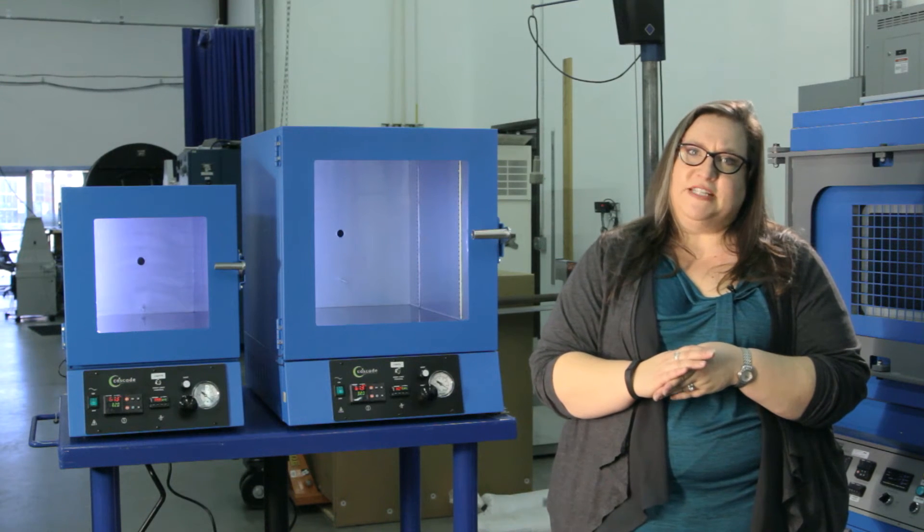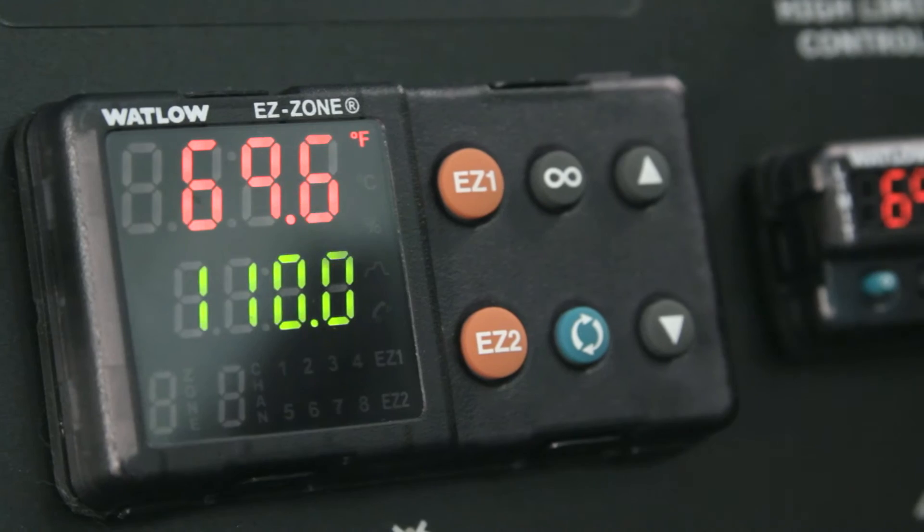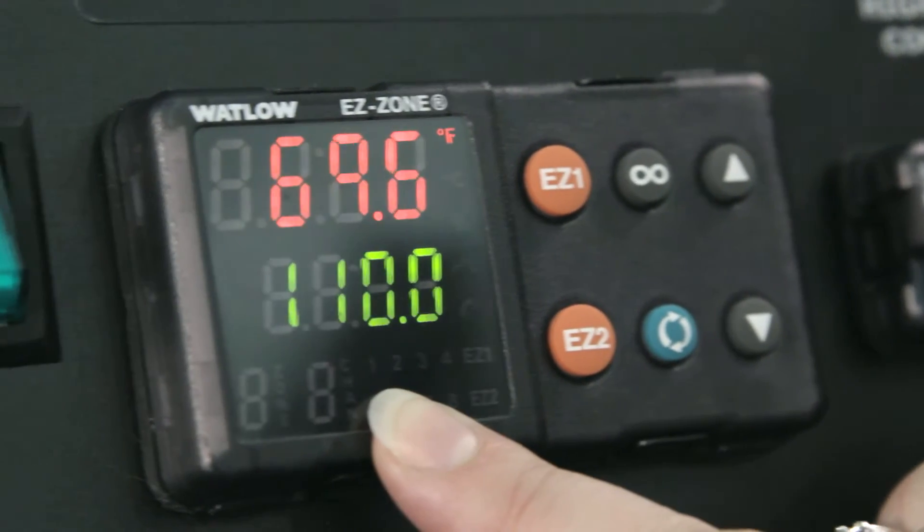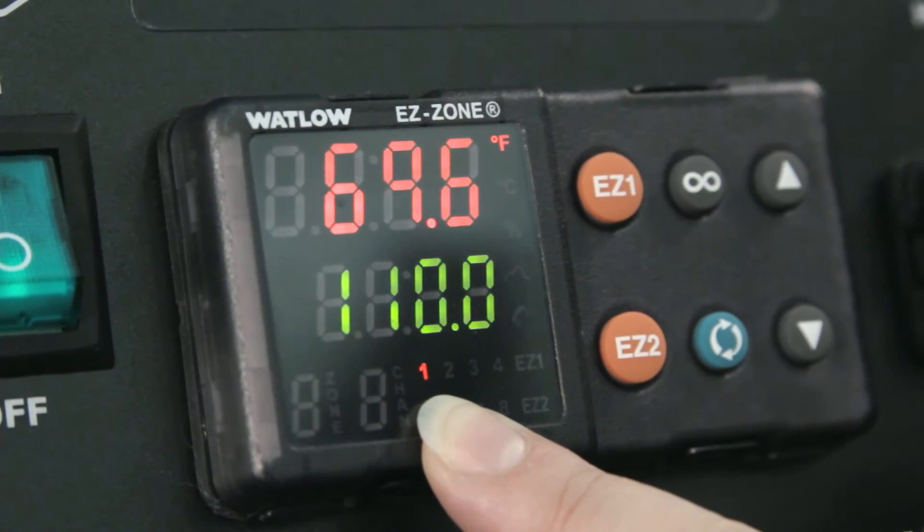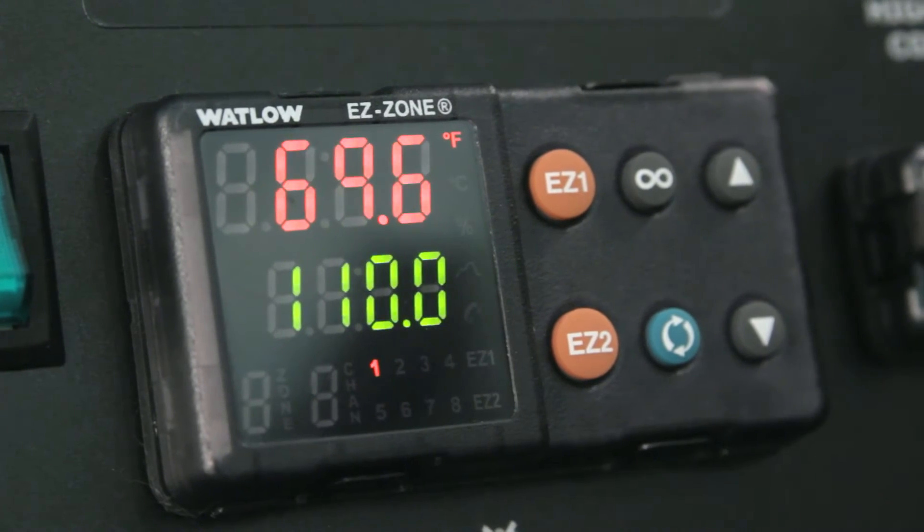The controller provides a lot of information to the user: the current temperature in the oven, the set point, as well as a pilot light that will inform you as to whether or not the heaters are being activated.